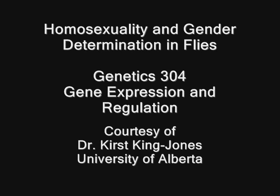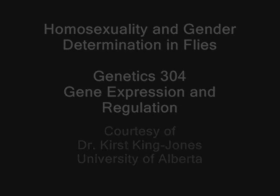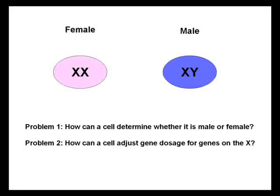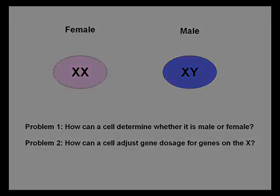Homosexuality and gender determination in flies, courtesy of Dr. Kersking Jones of the University of Alberta. How can a cell determine whether it is male or female? How can a cell adjust gene dosage for genes on the X chromosome?